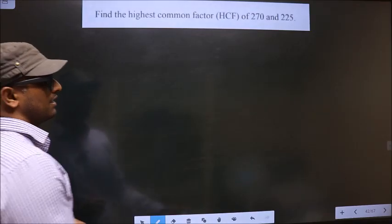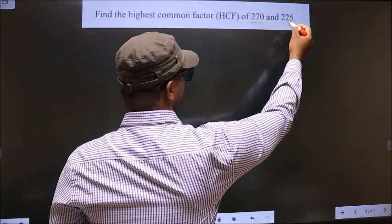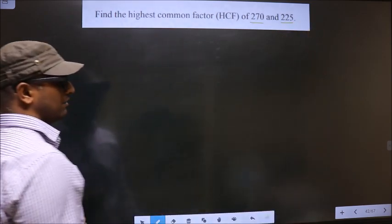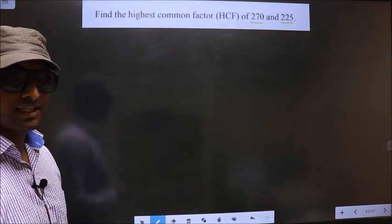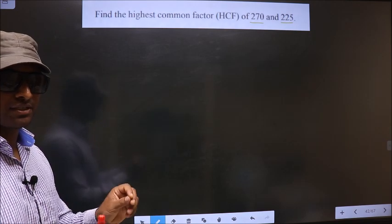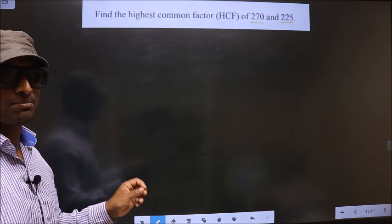Find the highest common factor of 270 and 225. To find the HCF, first we should do the prime factorization of each number separately.